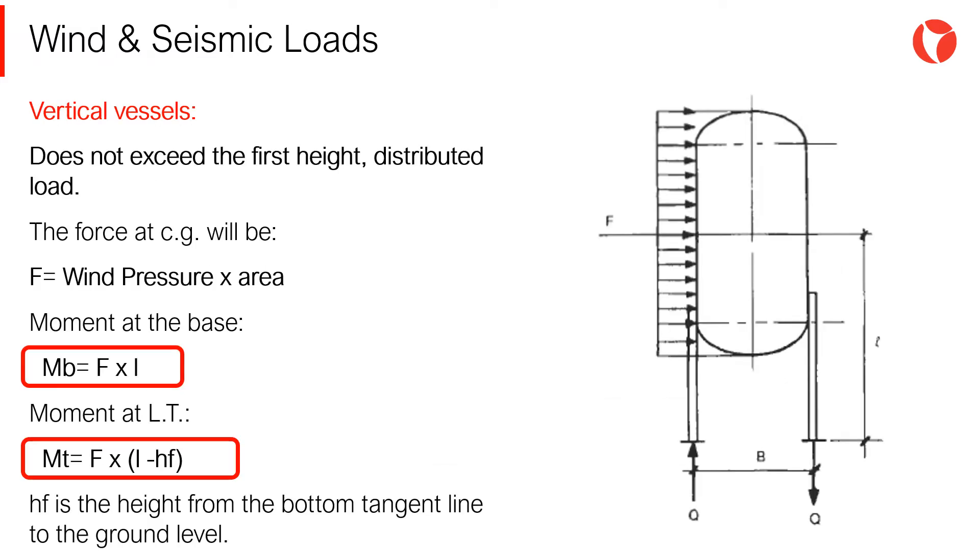When the height of the vessel does not exceed the first height threshold of the wind pressure profile, only the distributed load value is considered as shown in the figure. The wind load F applied at the center of the cross section area of the equipment will be the wind pressure times the cross section of the vessel.